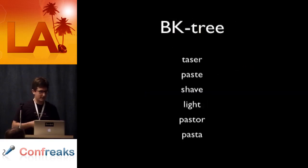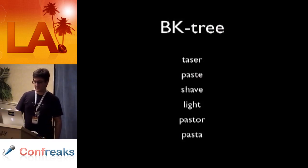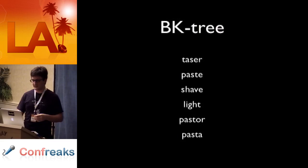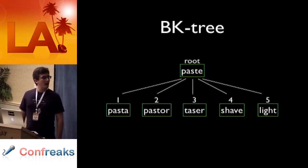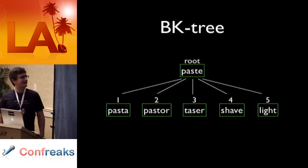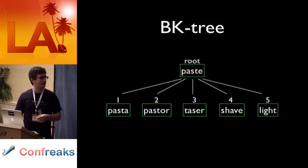Let's take a look at an actual example of this. So let's say this is our dictionary. We have six words there: taser, paste, shave, light, pasture, and pasta. And so to start building our BK tree, we're going to pick one of the words on there, totally at random, completely at random, let's say it's paste. So we're going to build a tree. And it just so happens, of course, that our tree works out perfectly. Paste is the root, and pasta is one distance, it's one edit distance away from paste. Pasture is two edit distance, taser is three edit distance, etc., going down the line there.